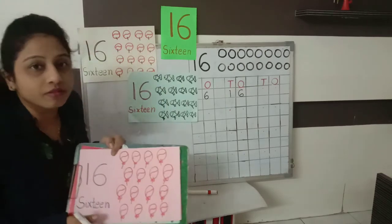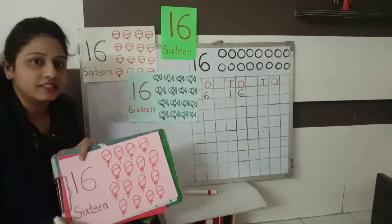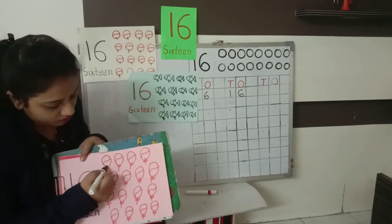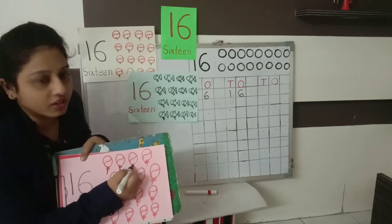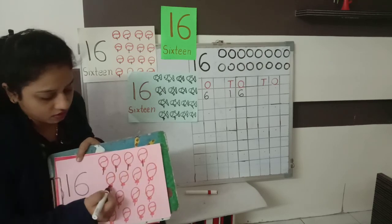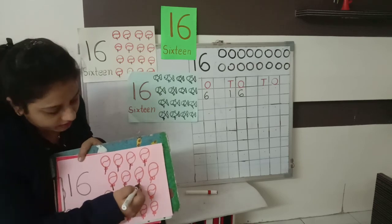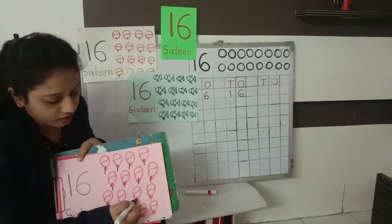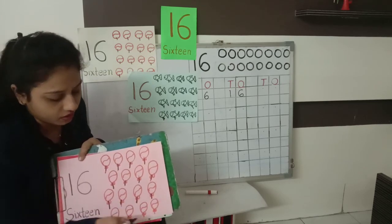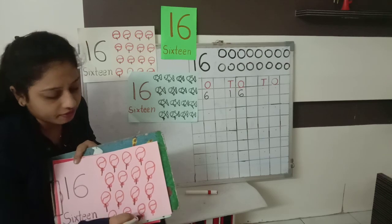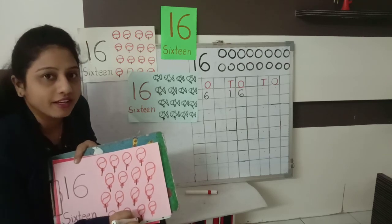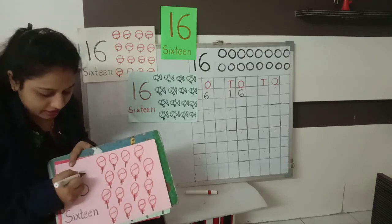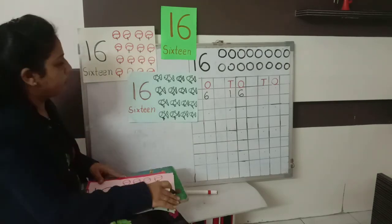Now see, what are these? Balloons. Balloons, yes. Let's count. So many balloons are here. Let's count. 1, 2, speak loudly: 3, 4, 5, 6, 7, 8, 9, and 1-0, 10. Very good. 1-1, 11; 1-2, 12; 1-3, 13; 1-4, 14; 1-5, 15; and 1-6, 16. 1-6, 16. Okay?